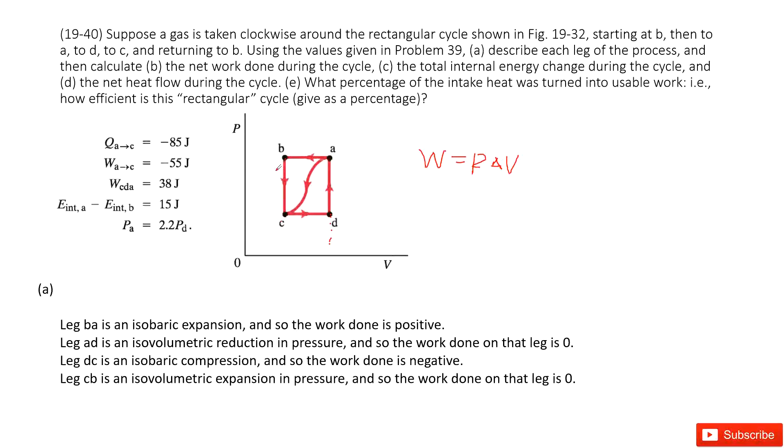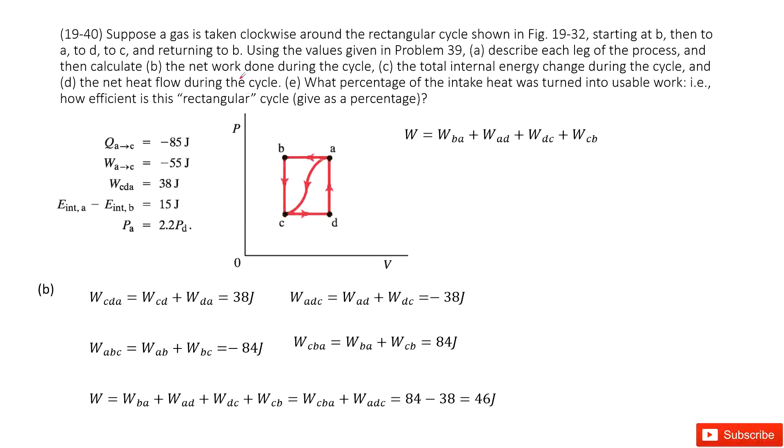Now we come back to C to B. We can see volume is constant and pressure increases. So this is isovolumetric expansion in pressure. And the work done is zero because delta V equals zero.